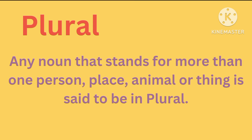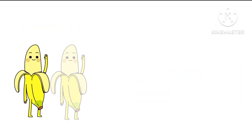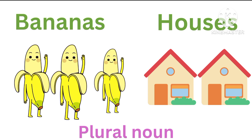Plural: Any noun that stands for more than one person, place, animal, or thing is said to be in plural. For example, books and apples — they are both plural nouns because they are more than one. There are three books and two apples, so they are plural. Bananas and houses are also plural nouns because they are more than one.